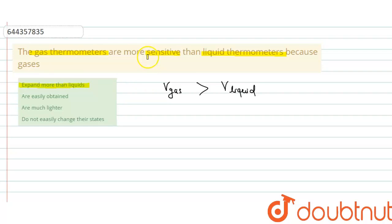more sensitive - because a small change in temperature causes a considerable change in volume of gas compared to liquid. That's why gas thermometers are more sensitive than liquid thermometers. I hope you understood the explanation. Thank you. For Class 6th to 12th,